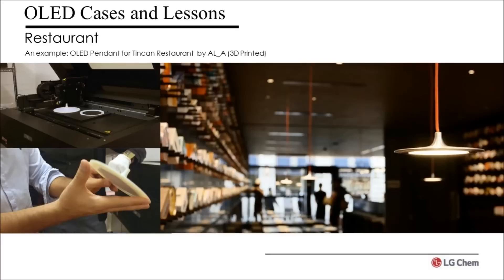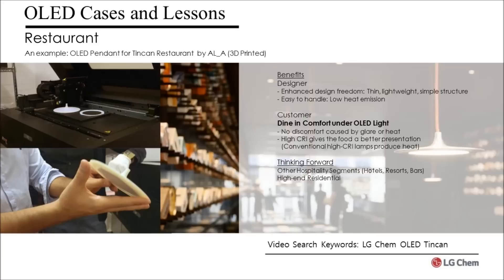This first case is a restaurant in Soho, London. The tables and bar are illuminated by OLED pendants which were designed by Amanda Levitt and her team of architects. Because of the simplicity of the OLED structure, they did not require much expertise on the electrical aspect of creating a lighting fixture. They simply used 3D printing to create their prototypes, which may well be used as the final product given that the material produces the desired finishing. OLEDs provide designers the freedom to create new designs.